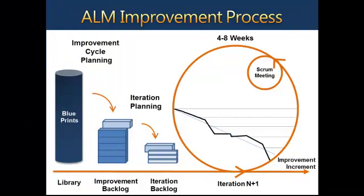Let's take a closer look at the mechanics behind the process and tools. The ALM improvement process is based on the application of Agile principles. The logic, terminology, and overall thinking is very much anchored in Agile concepts and Scrum. Coming out of the assessment, we've identified practices to improve. We now need to translate those items into specific improvement actions. To do so, we first begin by creating an improvement backlog. To facilitate this activity, the framework includes a library of ready-to-use improvement items, or blueprints.